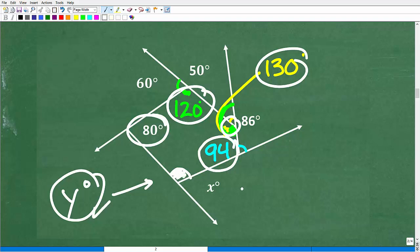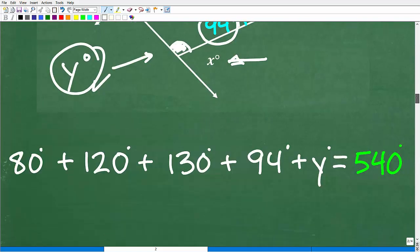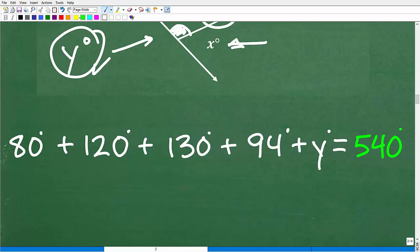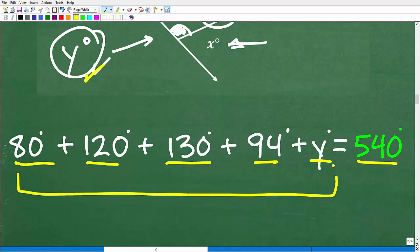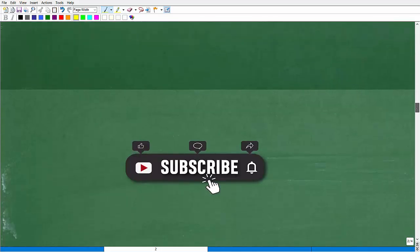So how can I solve for this? Well, I know the sum total, the interior angles of a pentagon is 540 degrees. So we could just write out a basic equation like this. So 80 plus 120 plus 130 plus 94 plus this mystery angle Y is equal to 540 degrees. Again, the sum of the interior angles of a five-sided polygon, i.e. a pentagon, is equal to 540. So let's see if you can go ahead and solve this basic equation for Y. And let's take that next step. But before we do, let's have you quickly subscribe to my YouTube channel.